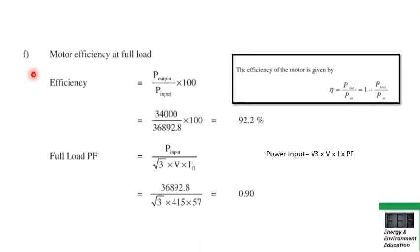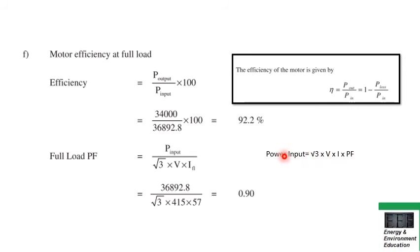For Part F — efficiency — the formula is power output divided by power input times 100. Power output is 34,000 W and power input was calculated as 36,892.8 W; dividing gives motor efficiency. For power factor, the formula is P_input divided by (√3 × V × I), where V is voltage and I is current. Dividing motor input power by root 3 times voltage times current gives the full load power factor. This completes the entire numerical.